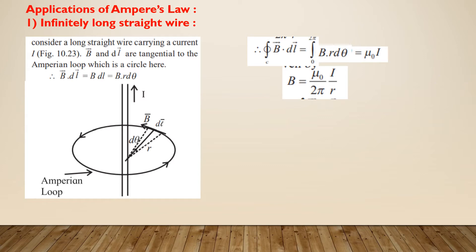the closed integral B bar dot DL bar is equal to integral B R D theta within the limits 0 to 2 pi. As for the circular loop, the total angle subtended is 2 pi. The integration gives us the final expression for the magnetic induction as B is equal to mu0 I upon 2 pi R, which is in complete agreement with the derivation which we had derived previously using Biot-Savart's law.